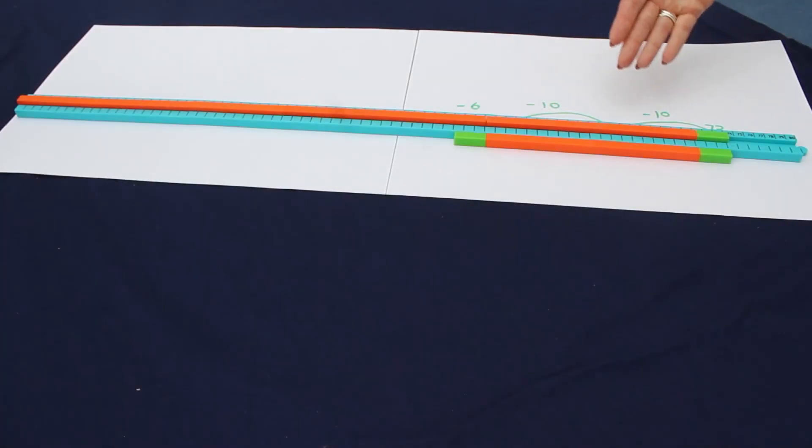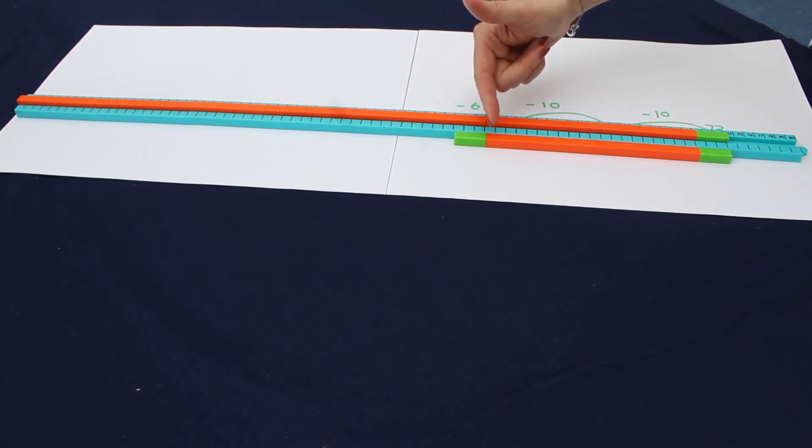An alternative to that, depending on how the children chose to work that out, they could take away 3 to get to the 70, then take away 10 and take away 10, and in this instance they'd have to take away another 3 because it was 26 that we're subtracting. You would still get 47 as the answer.